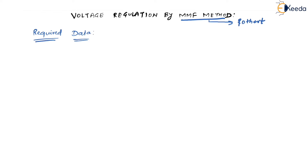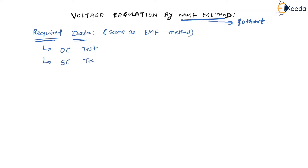The data required is the same as the EMF method. In the EMF method we need OCC characteristics or OC test results, then we need short circuit test results, and we also need the value of RA. The OC test is the open circuit test, and it gives you the OCC characteristics.